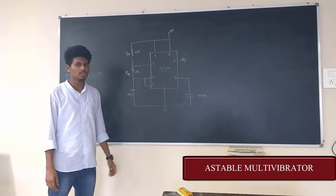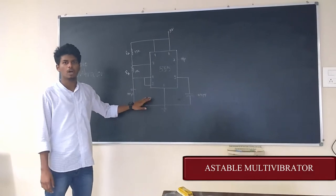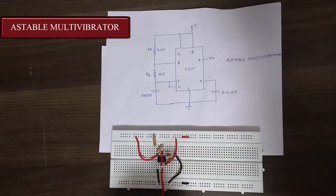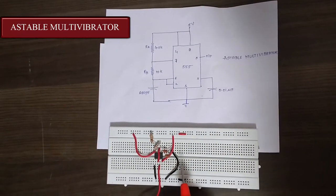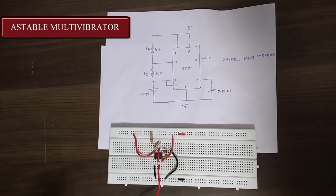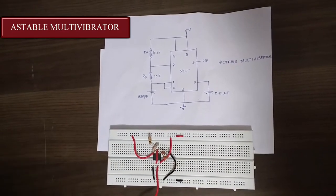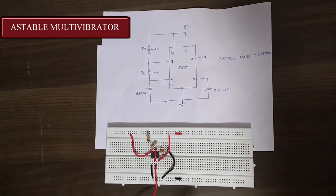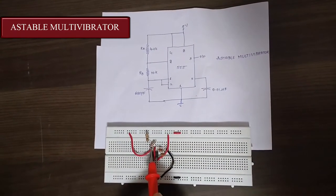Now let us look into the implementation of astable multivibrator on the breadboard. So this is how the astable multivibrator is implemented on breadboard. As you can see, the IC used here is IC 555, which is a timer IC. This is the resistor Ra and this is the resistor Rb.